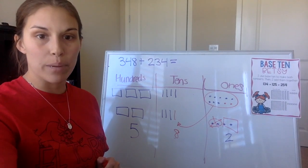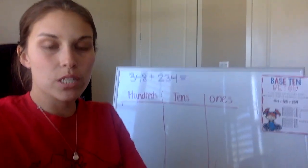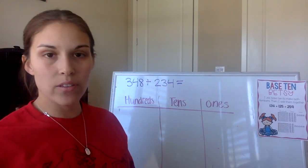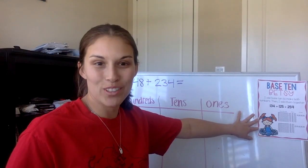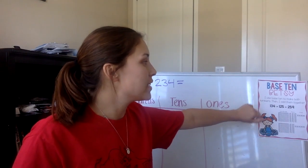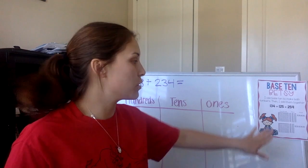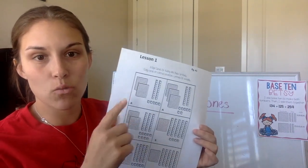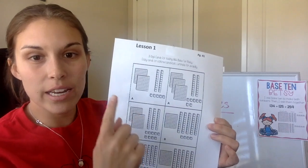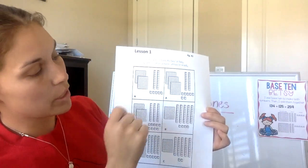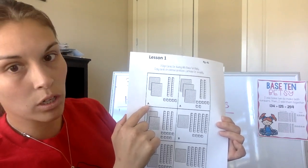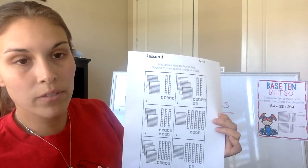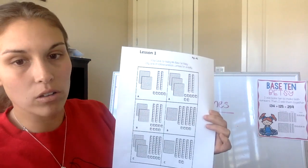This is called adding with regrouping. Boys and girls, now it is time for you to practice adding three-digit numbers using base ten blocks. You need to have your base ten Betsy poster — that's the strategy we're using today. You can use base ten to make both numbers and then add them together. You also need to have this page that says lesson one, page 41. In each square there are pictures of base ten blocks with a letter in the bottom left corner. Your job is to cut all six of these squares out. Please pause the video right now and cut out all six squares.